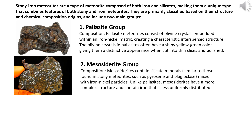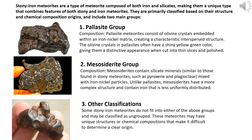(2) Mesosiderite group: mesosiderites contain silicate minerals similar to those found in stony meteorites, such as pyroxene and plagioclase, mixed with iron-nickel particles. Unlike pallasites, mesosiderites have a more complex structure and contain iron that is less uniformly distributed. Some stony-iron meteorites do not fit into either of the above groups and may be classified as ungrouped.